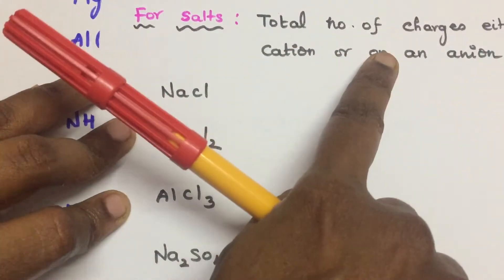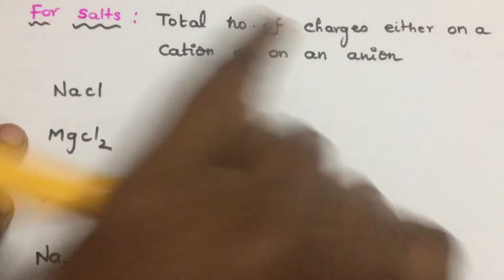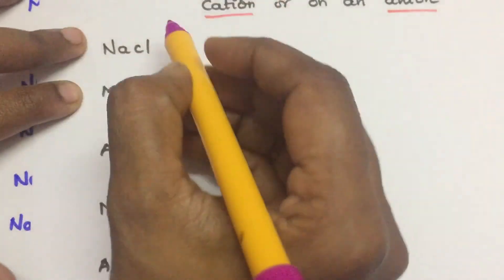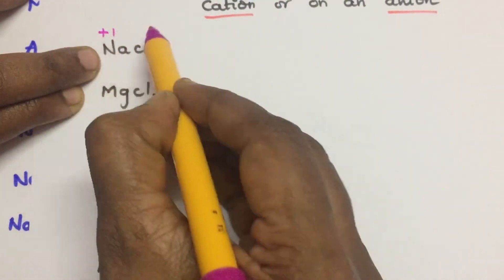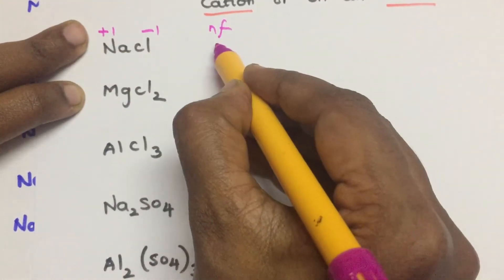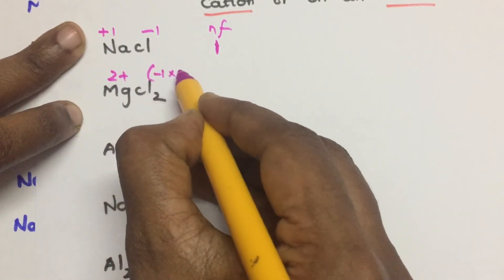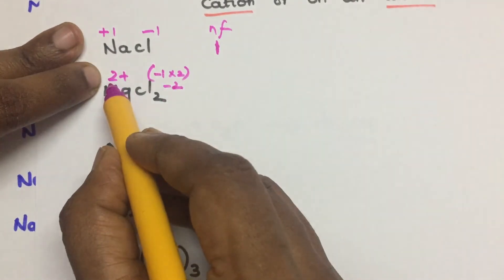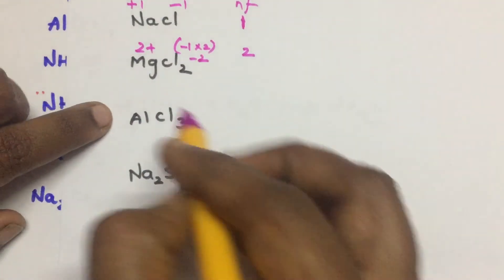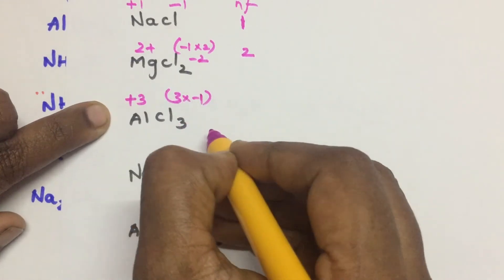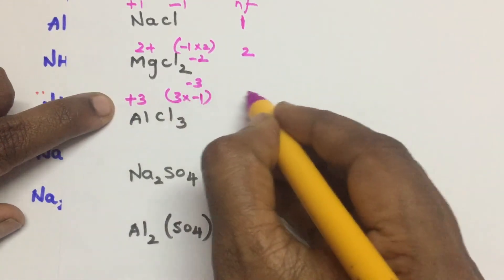Now for salts — also very simple. N-factor for a salt is the total number of charges either on the cation or on the anion. For NaCl: Na+ is +1, Cl- is -1, so N-factor = 1. For MgCl2: Mg2+ is +2, Cl- is minus 1 times 2 giving -2, so N-factor = 2. For AlCl3: Al3+ is +3, Cl- is minus 1 times 3 giving -3, so N-factor = 3.